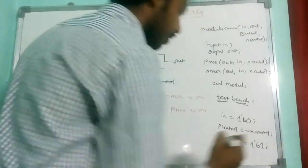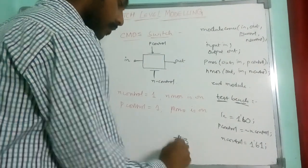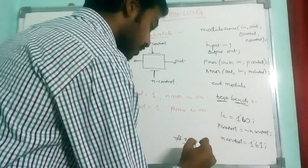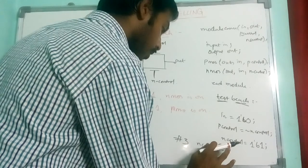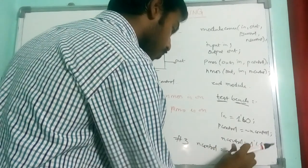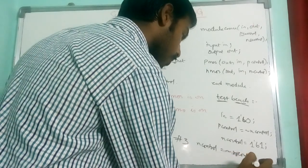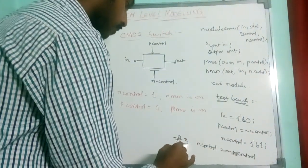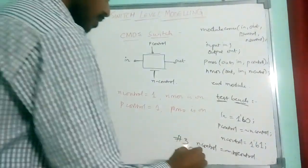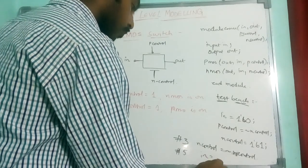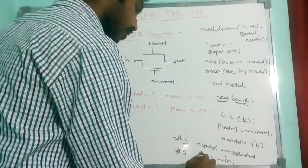P control is negation of N control, negation of N control. Now again I initialize N control to 1 bit binary 1. Now for every 3 nanoseconds I will change my N control to negation N control. And for every 5 nanoseconds I will change my input to negation input.